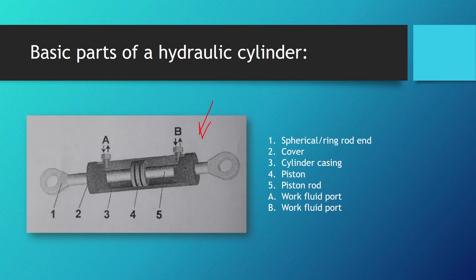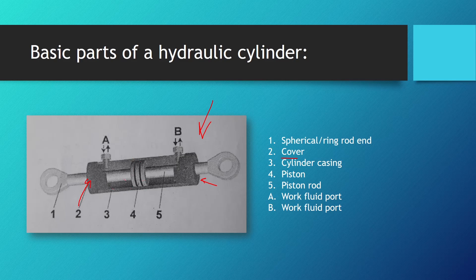This is a cutaway picture of a double-acting — meaning we can bring pressurized fluid on both sides of the piston — and double-rod cylinder, meaning it has a piston rod on both sides of the piston. Number one is the spherical or ring rod end, used to connect the cylinder to work elements. We can see both covers, which can be unscrewed to maintain the piston seals or treat the inner walls. Number three is the cylinder casing, number four is the piston, and number five is the piston rod on both sides. A and B are the work fluid ports through which fluid enters or exits the work chambers.